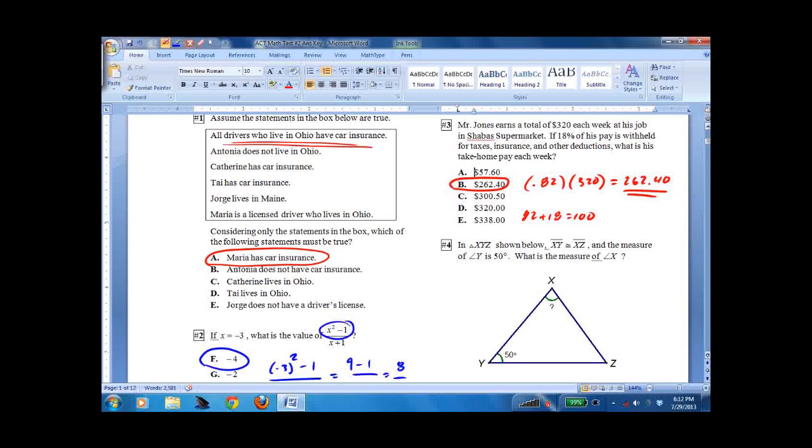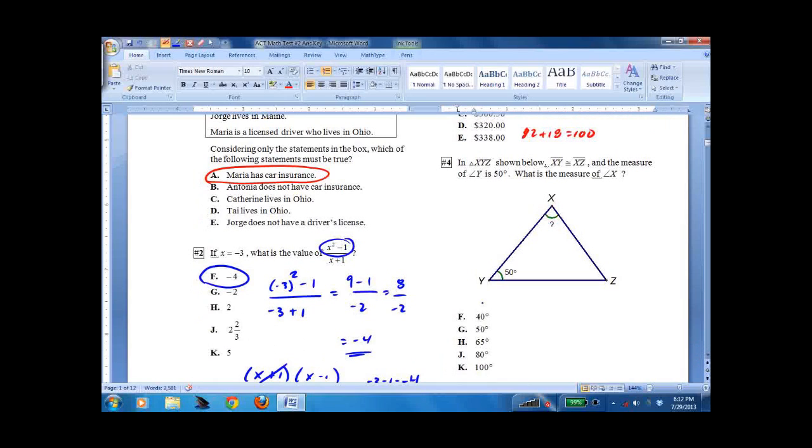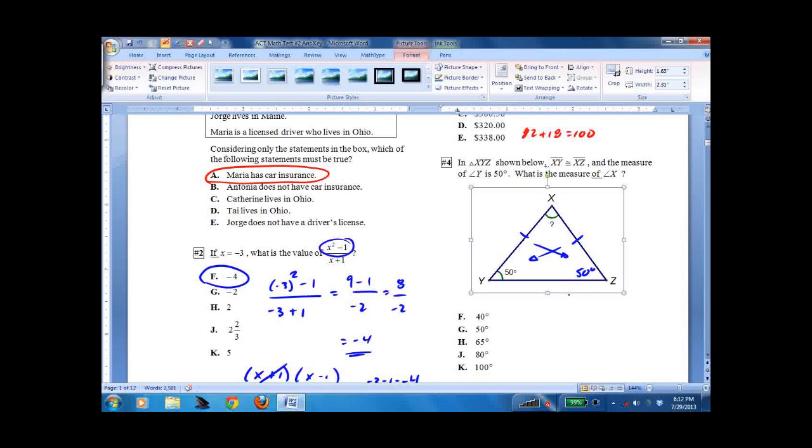Number 4 in triangle XYZ is shown below. XY is going to XZ. This one's not necessarily drawn to scale, but it's pretty close. If you remember from geometry, the sides across from angles have to be equal if the sides are equal. The angles have to be equal if the sides are equal. So we're looking at 100 plus this angle x, that equals 180. Therefore, quick problem, x equals 80.